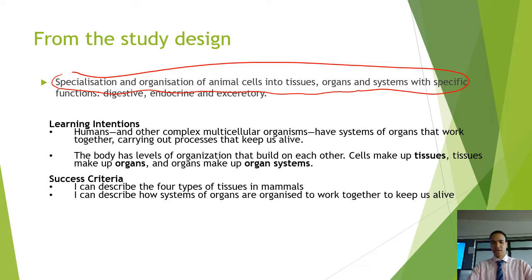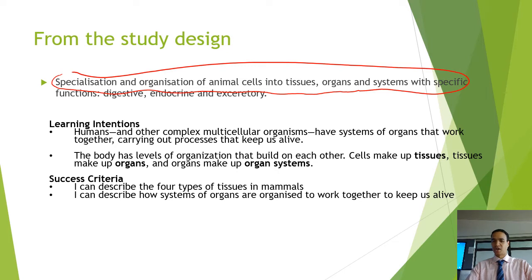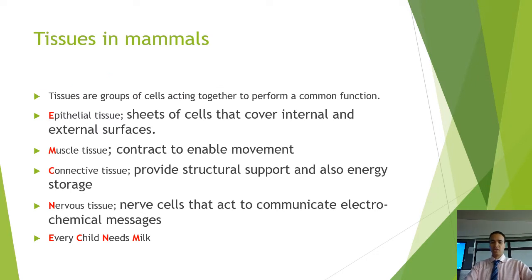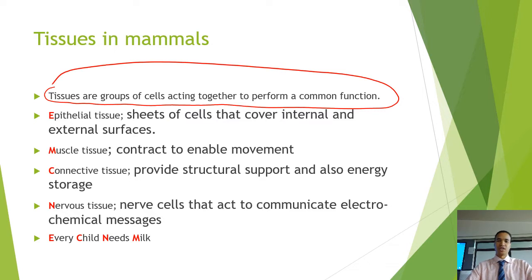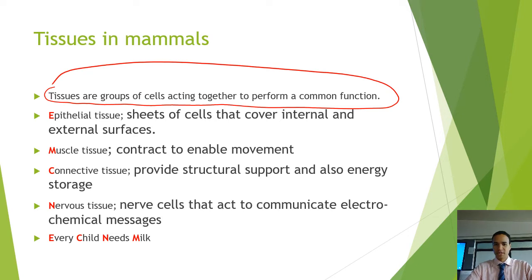Our success criteria for this video is that you can describe the four types of tissues in mammals, and also describe how organ systems are put together to keep us alive and how they work together. Straight into it — there are four types of tissues in mammals. The definition of a tissue is a group of cells that act together to perform a common function. They don't have to be the exact same cell, but they act together to perform the same function.